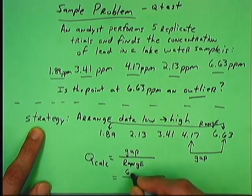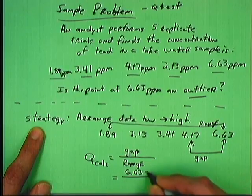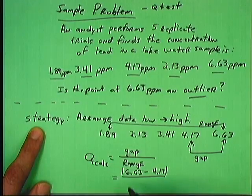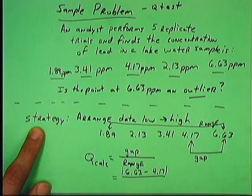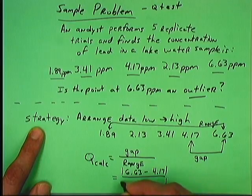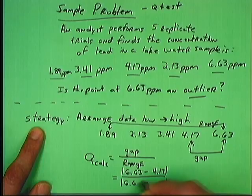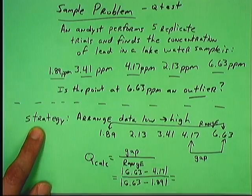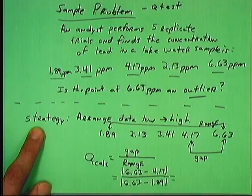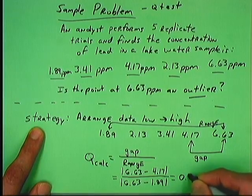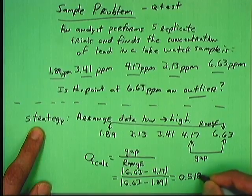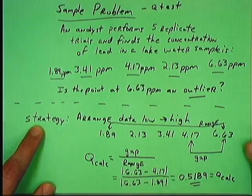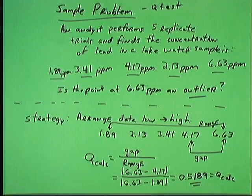So if I wanted to be more quantitative now, I could. Say my gap is 6.63 minus 4.17. Take the absolute value of that so it's never negative. If it was on the other side, it might be a little bit more of an issue. But again, the Q is not going to be a negative number. And then I'm going to do my range, 6.63 minus 1.89. I can do my math there pretty quickly by use of a calculator. Of course, calculators are allowed on your exam. And my Q calc works out to be 0.5189 once I do the math. Okay?